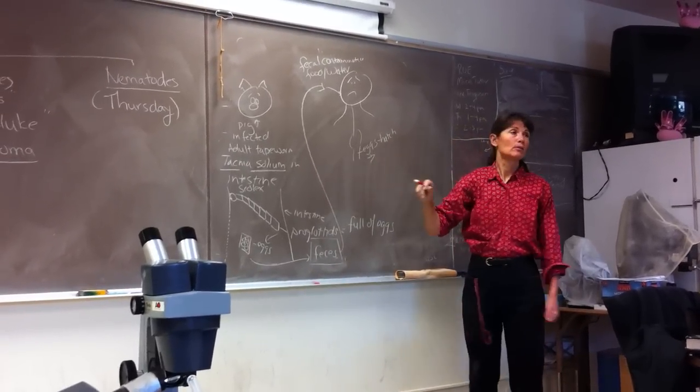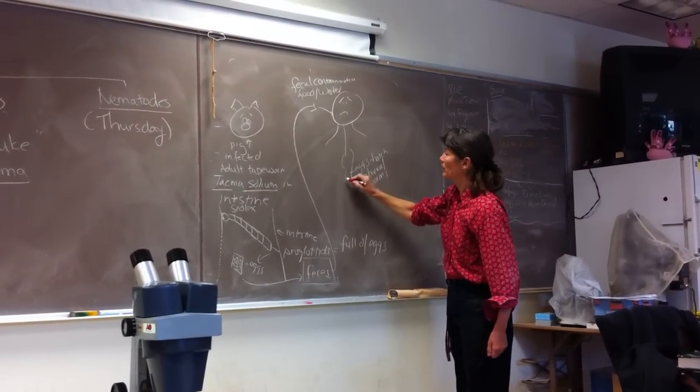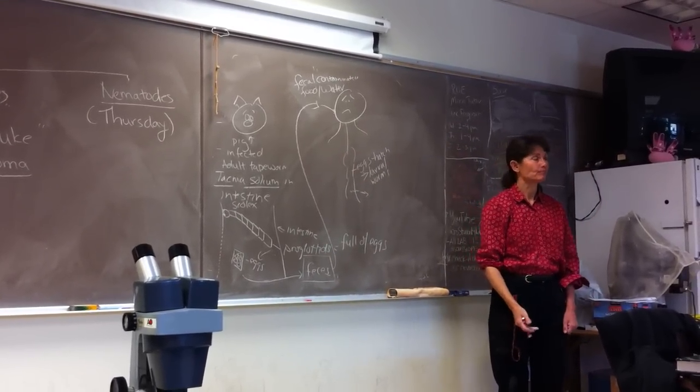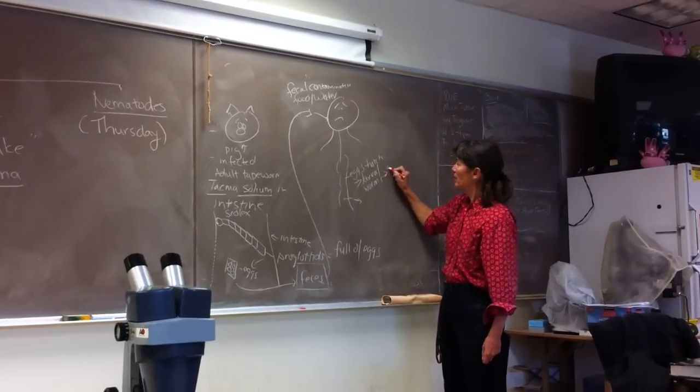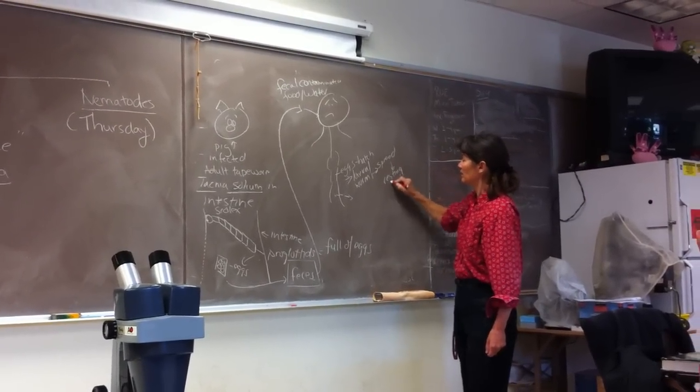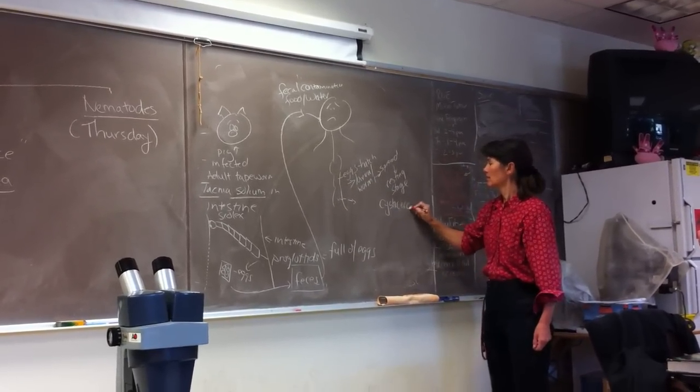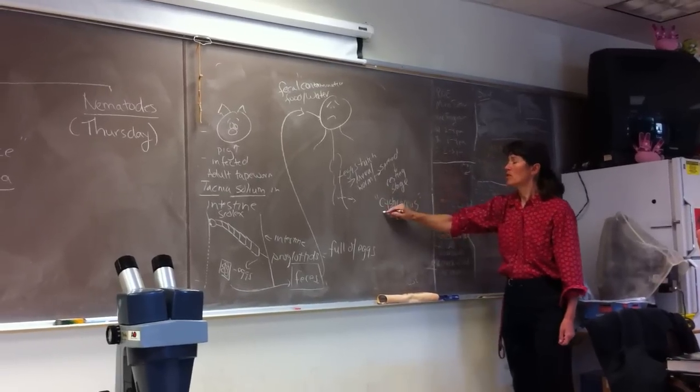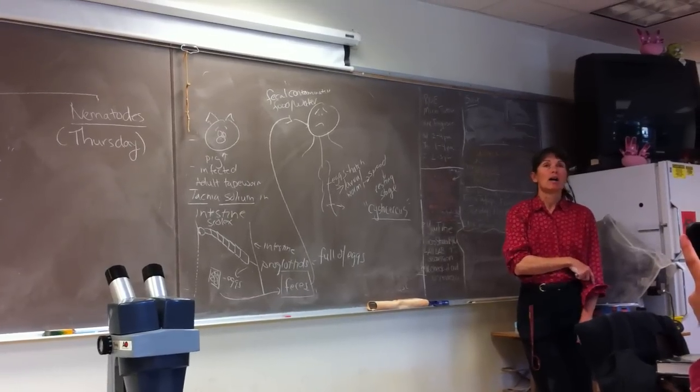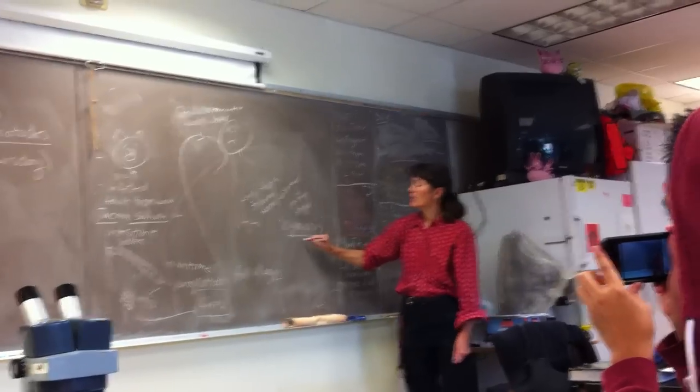The eggs will pass through the stomach into the intestine and they hatch into the little baby worms called larva. We'll call them larval worms. The larval worms burrow out of the intestine and they can spread throughout the body. Then they form these little resting stages that you guys saw, the cysticercus. The cysticercus can form in skeletal muscle, in our diaphragm. One of the really scary things is they can form in the brain.